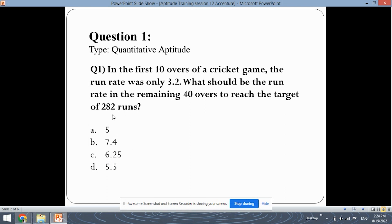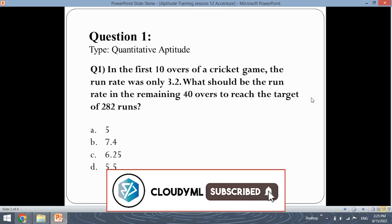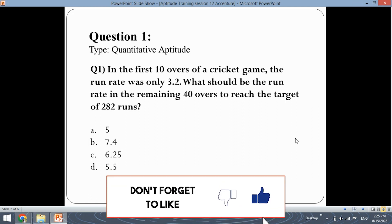So, for reaching the target of 282 runs, the team must score the runs at a run rate of 6.25 for the remaining 40 overs. Let's move ahead to the next question.